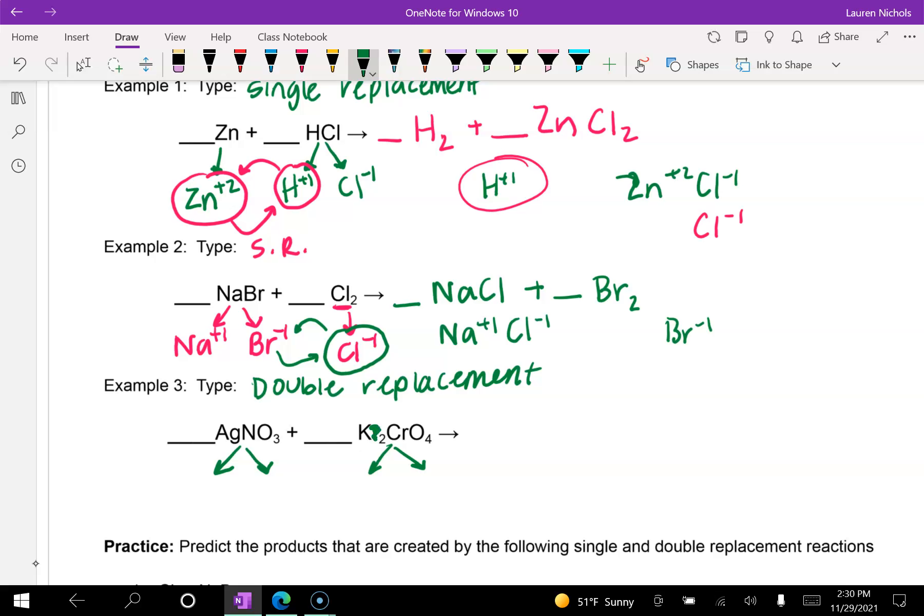Now, there's a typo here. That should be a K, not a KR. But we're going to have Ag and NO3, which nitrate or NO3 has a negative one charge. Silver has a positive one charge. And you can check me because silver and nitrate are both on the back of the periodic table. And then potassium and CrO4. Sometimes you might just need to play around with how you split up the elements in order to know which ones go together. Now potassium has a positive one charge, and chromate is negative two.